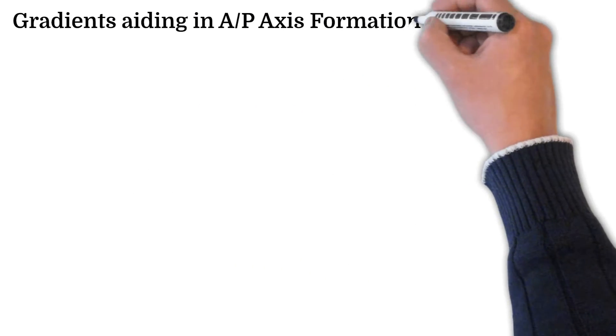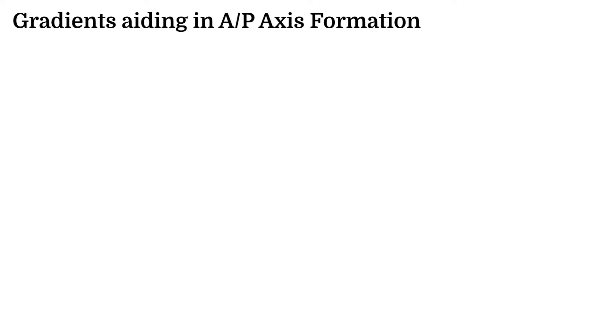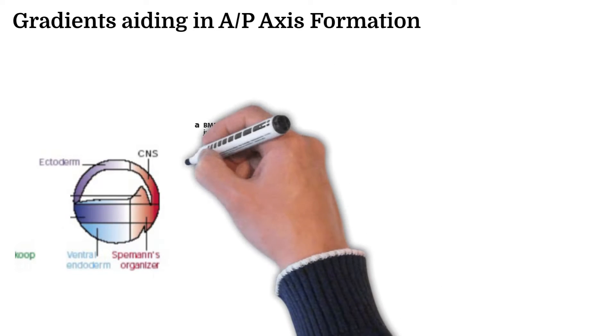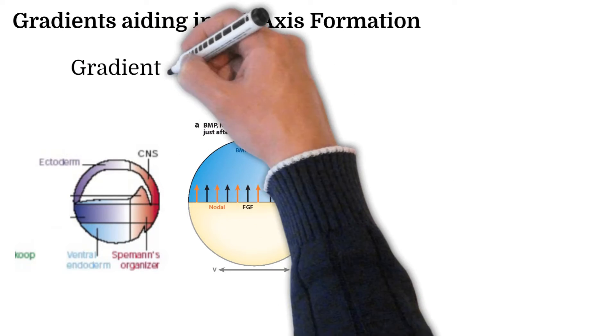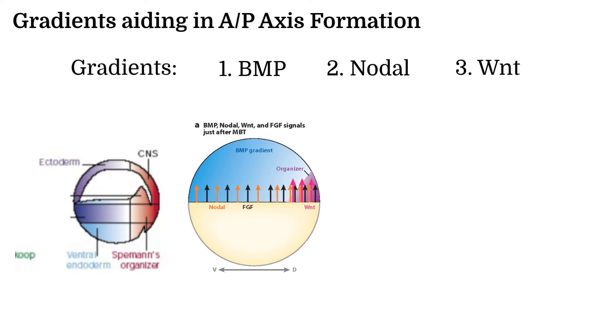Gradients early on in development play a crucial role in the anterior posterior axis component positioning and formation. Once the Speman organizer forms, gradients involving BMP, nodal, and Wnt proteins form. One specific area has a high concentration of BMP and nodal while another has a high concentration of nodal and Wnt.